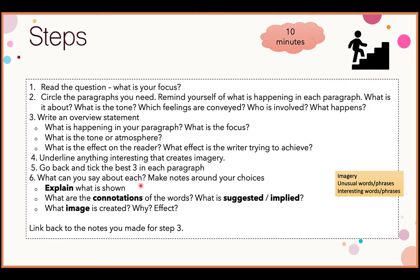Then think about what you can say about each choice. It's a really good idea to make notes around your choices on the text itself — this saves you doing a separate plan. Think about what is shown through the choice, the connotations of the words, what's suggested or implied, and what image is created for the reader. You can link everything back to the notes you made for your overview statement, which is there to help you as well as the examiner.